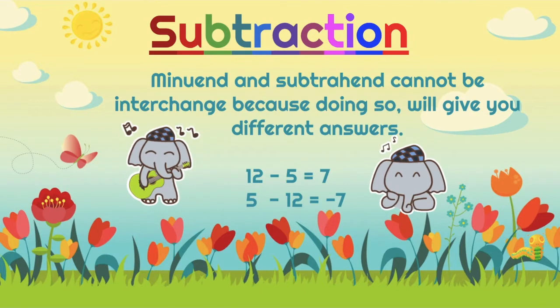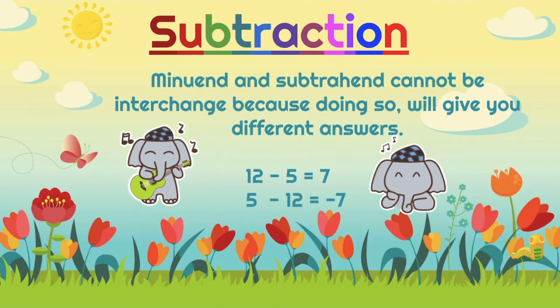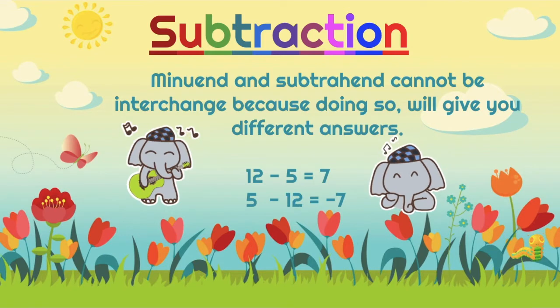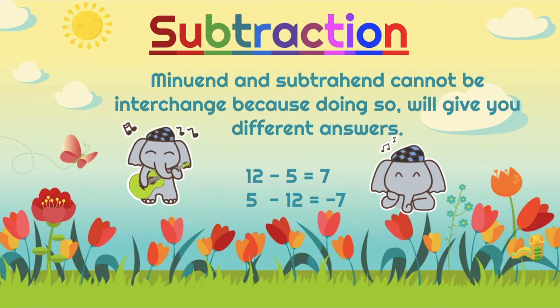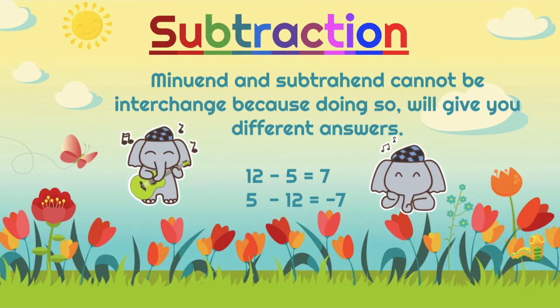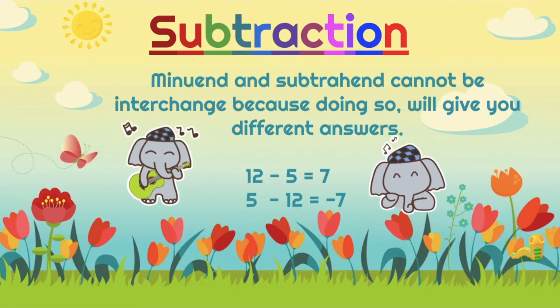Just like in our example below: 12 minus 5 is equal to 7. Interchanging 12 and 5 will give us negative 7.